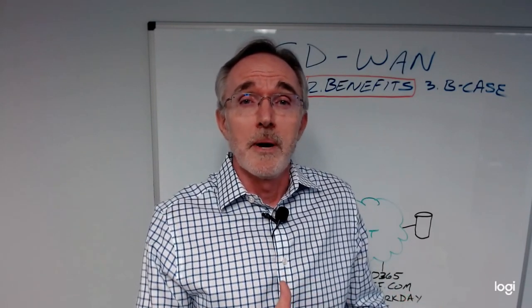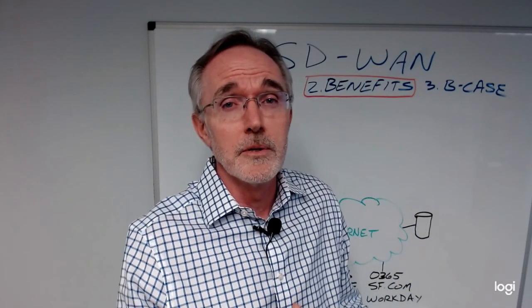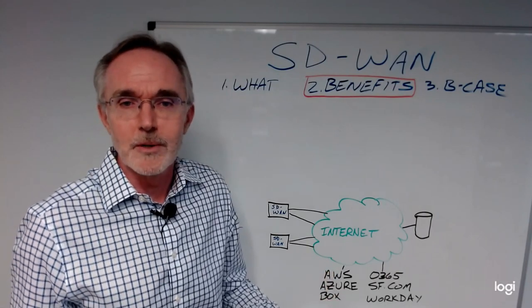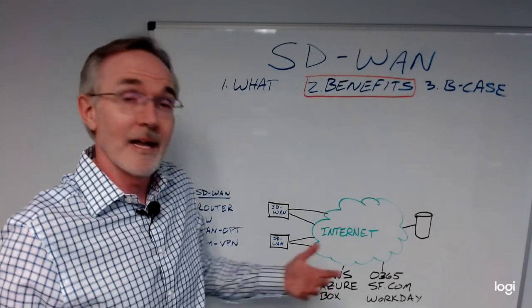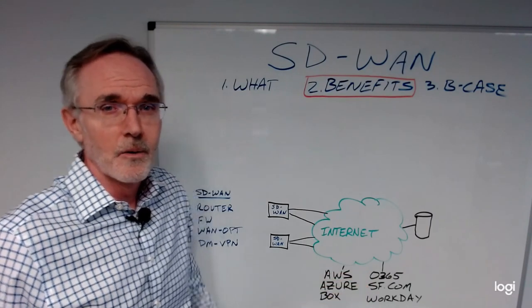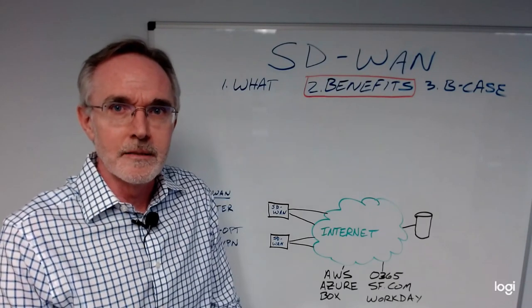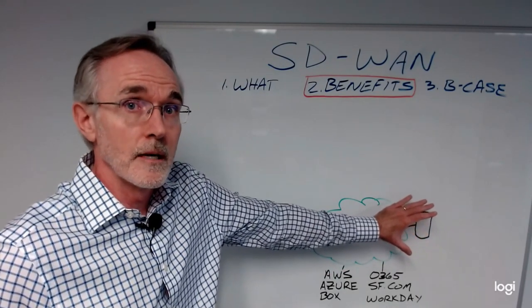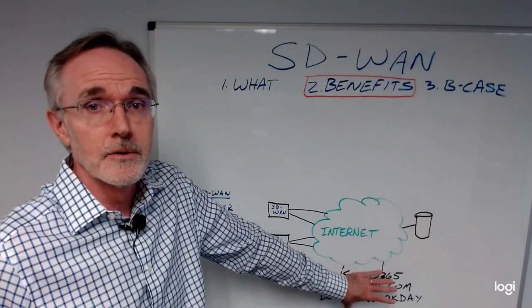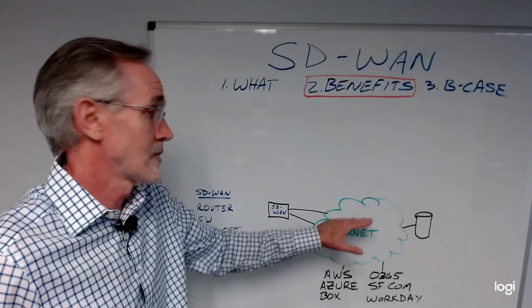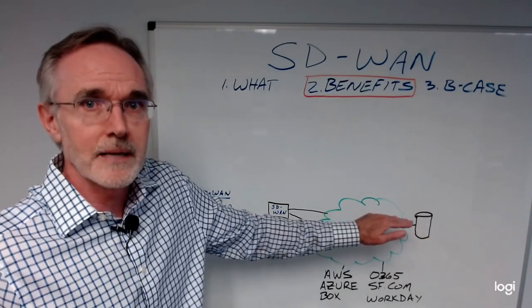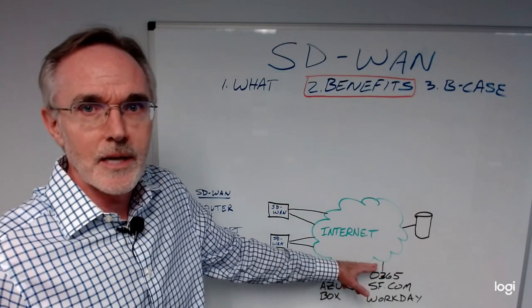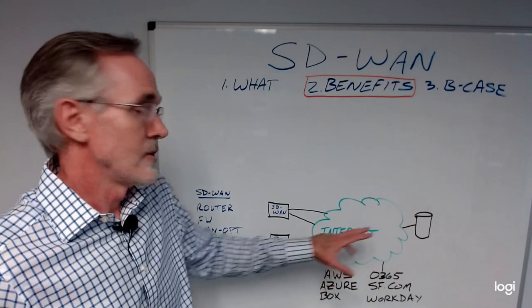SD-WAN as a network topology is a fantastic way for your users to access advanced applications now living in the cloud — infrastructure platforms like AWS and Azure, storage like Box, and applications like Office 365, Salesforce.com, or Workday, along with any other SaaS applications. We've seen how users have migrated from data center to cloud-hosted applications, creating inefficiencies in today's centralized networking — dedicated point-to-point or MPLS networks back to the data center with a central security treatment platform, then launching sessions out to cloud-based services, which is a very inefficient networking model.